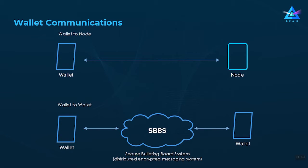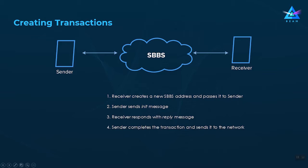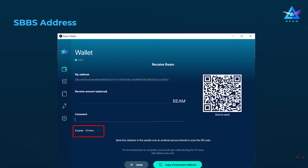Now let's see what happens when two wallets try to create a transaction using the SBBS system. Four steps occur: the receiver creates a new SBBS address and passes it to the sender; the sender sends the init message starting the transaction; the receiver replies; and the sender completes the transaction and sends it to the network. Whenever you press the receive button, a new SBBS address is generated with a default expiration time of 24 hours, after which it can no longer receive messages.